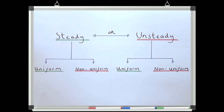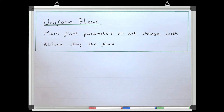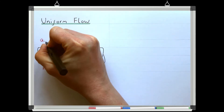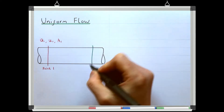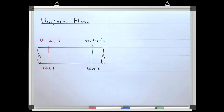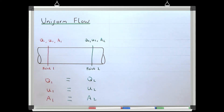Once we have worked out if the flow is steady or unsteady, the next way we can categorise our flow is as uniform or non-uniform. Uniform flow is where all of the flow parameters are constant with distance along the length of the flow. So if we consider a pipe and two points along it, the flow will have a discharge, a velocity, and an area at these two points. If all of these main parameters are the same at point 1 and point 2, the flow is uniform along that length.